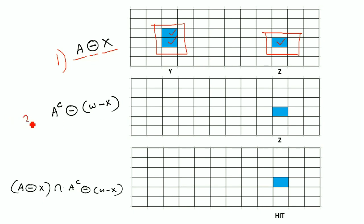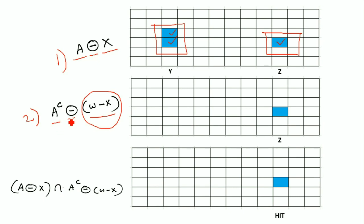After this, we go to the second step: we compute A complement eroded with W minus X, where W minus X is the boundary of the window and A complement is the complement of image A. When doing this operation, there are no pixels present in the object region Y, but for region Z, one pixel is present.